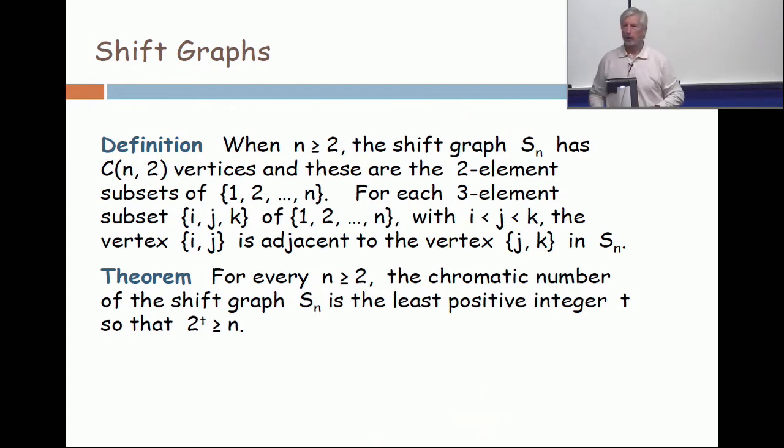Here's the answer: it is when you have i < j < k. So this vertex is adjacent to that vertex. Again, {i, j} is adjacent to {j, k}. It doesn't matter about the spacing. {i, j} to {j, k}, or {i, j} and {j, k}. It doesn't matter.